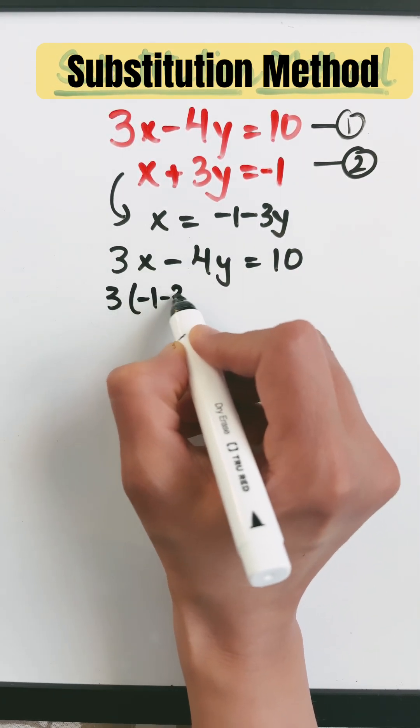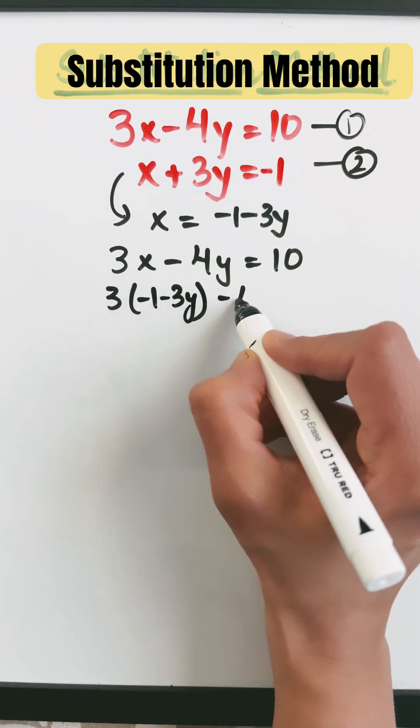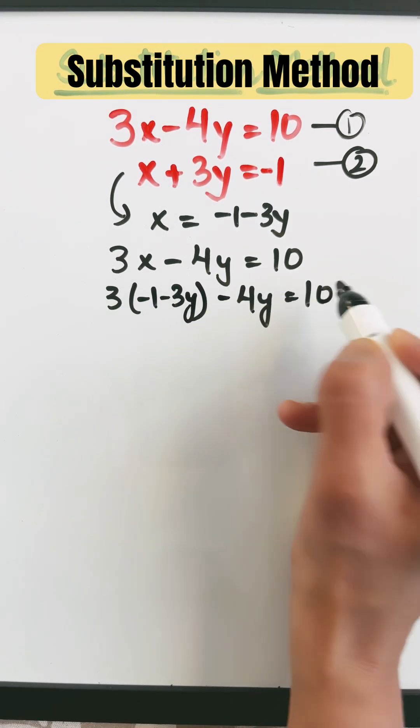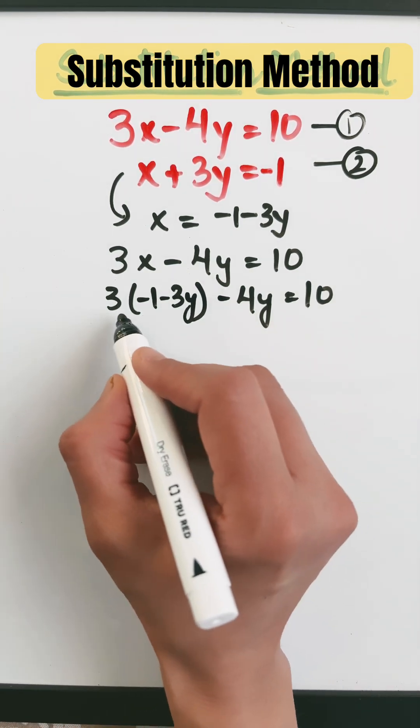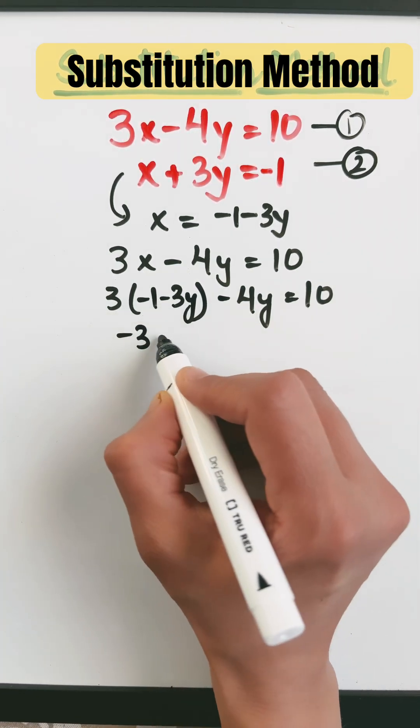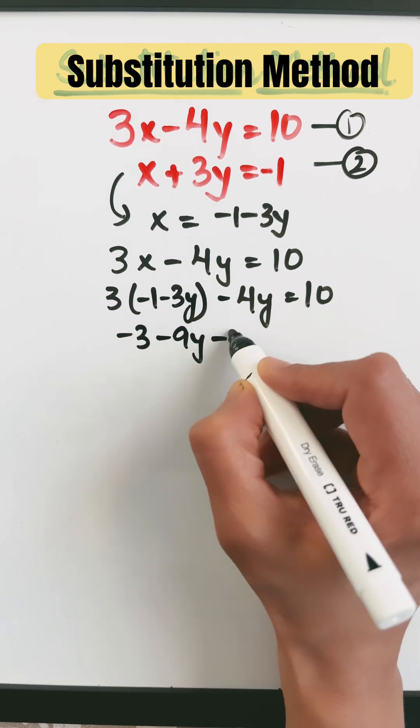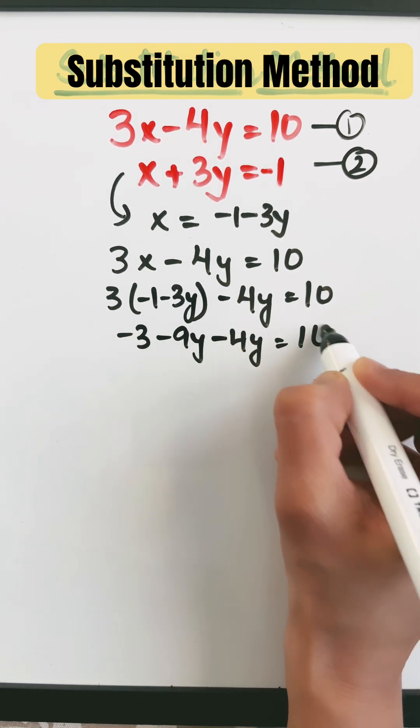Put x as minus 1 minus 3y in place of x, minus 4y equals 10. This is a linear equation in the variable y, so let's get the value of y from here. 3 times minus 1 is minus 3. 3 times minus 3y is minus 9y, minus 4y equals 10.